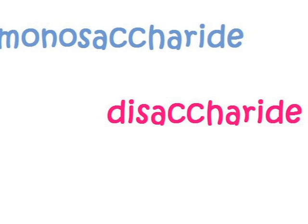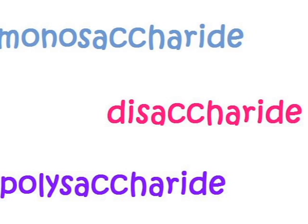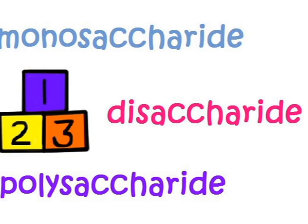The subunits include monosaccharide, disaccharide, and polysaccharide. Monosaccharides have one sugar ring, disaccharides have two, and polysaccharides have three or more.